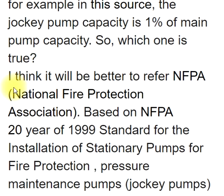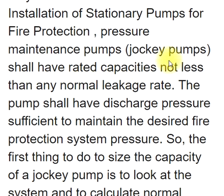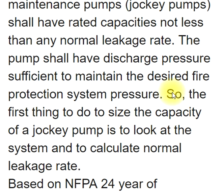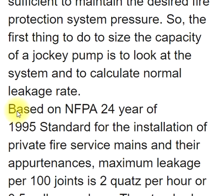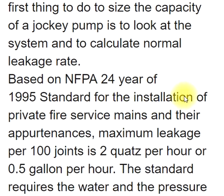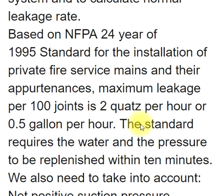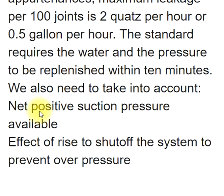Which answer is correct? It is best to refer to NFPA — the National Fire Protection Association. Based on NFPA 20 (1999 standard for the installation of stationary pumps for fire protection), pressure maintenance pumps (jockey pumps) shall have rated capacities not less than any normal leakage rate, and the pump shall have discharge pressure sufficient to maintain the desired fire protection system pressure. Therefore, the first step is to calculate the normal leakage rate. Based on NFPA 24 (1995 standard for the installation of private fire service mains and their appurtenances), maximum leakage per 100 joints is 2 quarts per hour (0.5 gallon per hour). The standard requires water and pressure to be replenished within 10 minutes. We also need to account for net positive suction pressure available, and the effect of rise to shut-off to prevent overpressure.